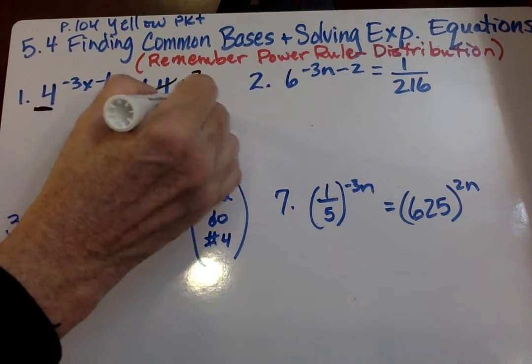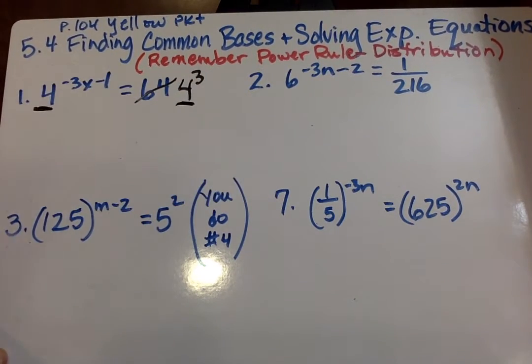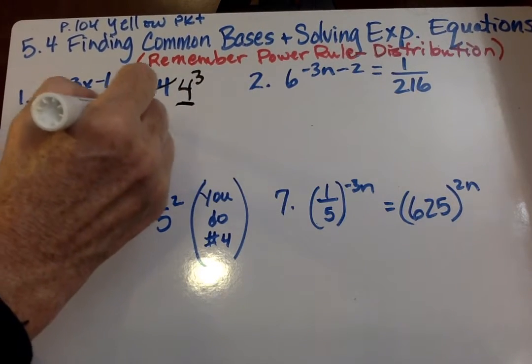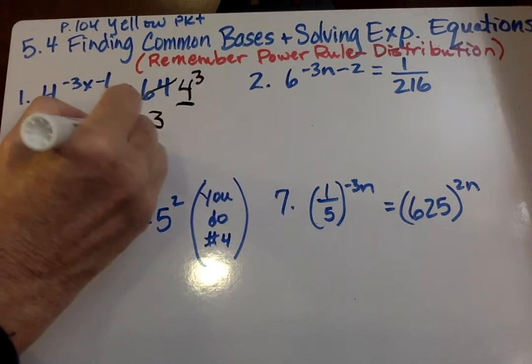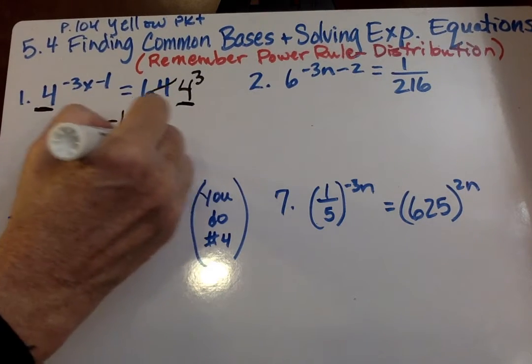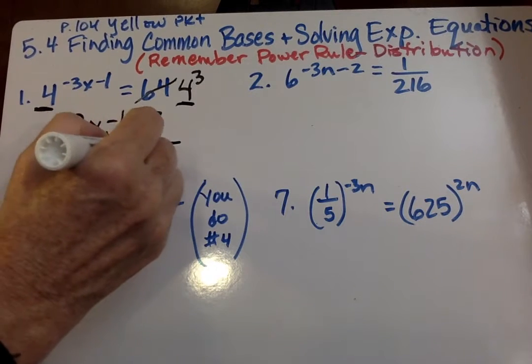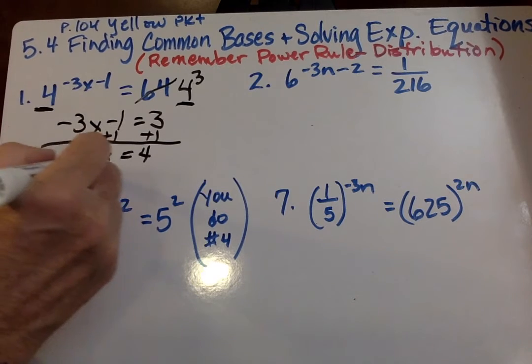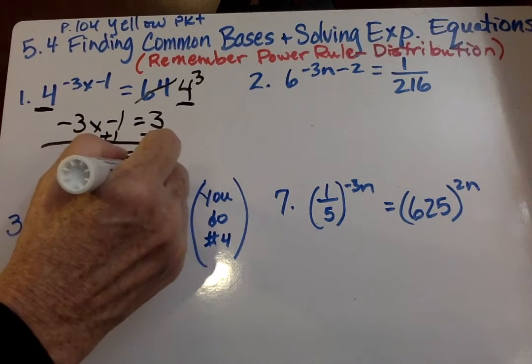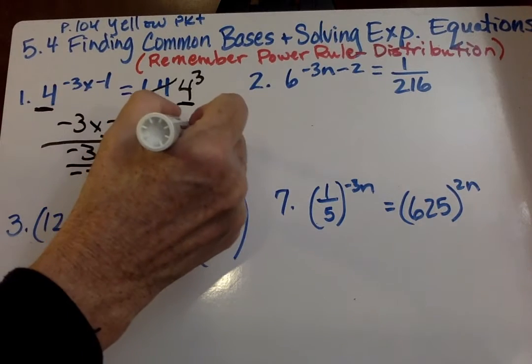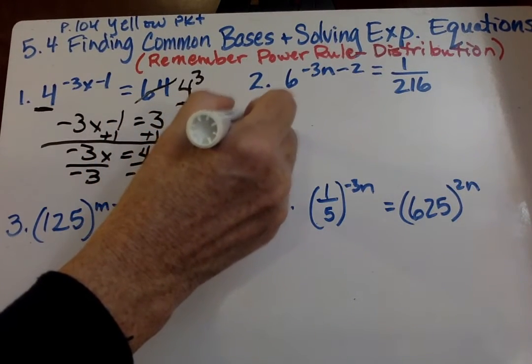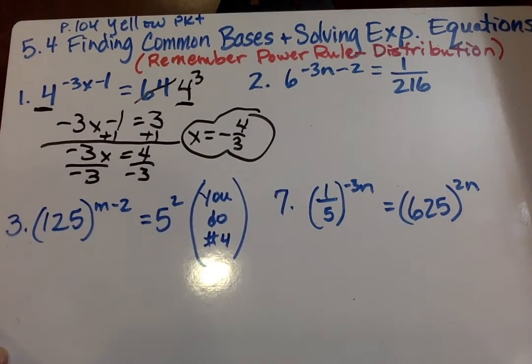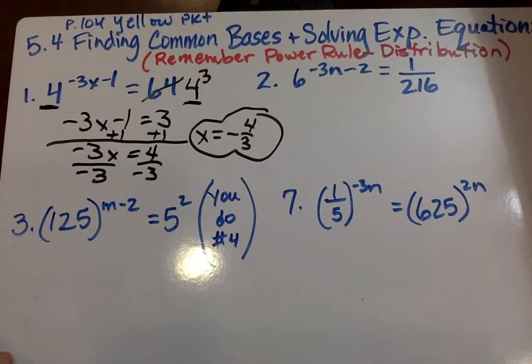Now they have the same base, and we can go ahead and put the exponents equal to each other. Negative 3x minus 1 equals 3. Then I'm going to add 1 here, so negative 3x equals 4. And then what do I do? Divide by negative 3. And we never leave a negative on the bottom, so x equals negative 4 thirds. And I prefer fraction over decimal.